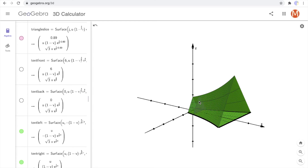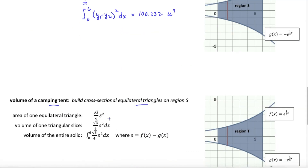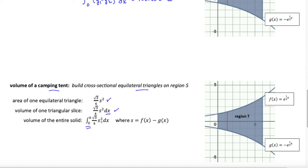All we have to do is get the area of the triangle, give it some thickness with dx, and then add them all up by integrating. From geometry, the area of an equilateral triangle is root(3)/4 times the side length squared. Give it some thickness for the volume of a triangular slice, then integrate. I'd pull out the fraction in front, integrate from 0 to 6, put the two functions into y1 and y2, and integrate (y1 minus y2) quantity squared dx. That volume is 43.402 cubic units.